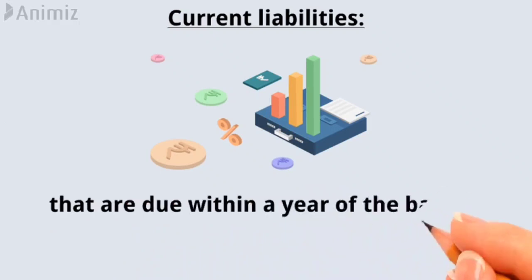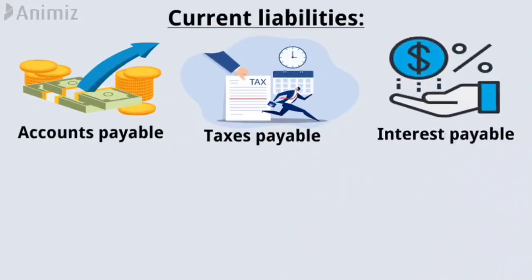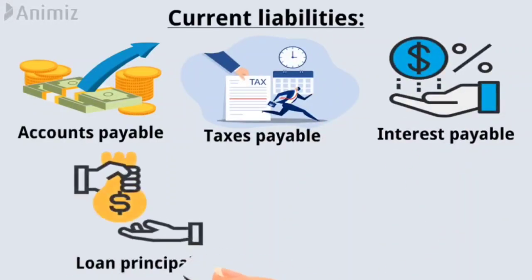Current liabilities are all liabilities that are due within a year of the balance sheet date, including accounts payable, taxes payable, interest payable on loans, any loan principal that must be paid within a year, deferred revenue such as advance payments from customers for goods or services not yet delivered, etc.